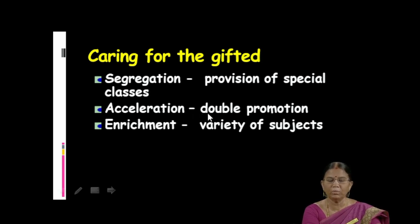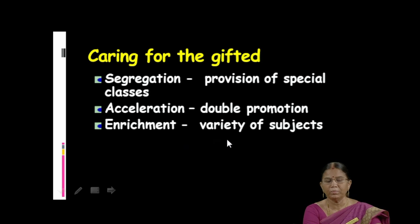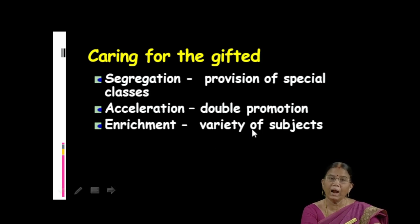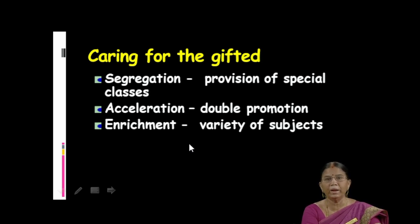The second method is acceleration — this is double promotion. Suppose the child is doing well in first standard; they might be double-promoted to third standard. The third method is enrichment. That means not only giving one subject or one assignment — a variety of subjects may be given according to their interest. Variety of assignments will be given, projects might be given, additional work and extra work might be given — in order to enrich their knowledge.